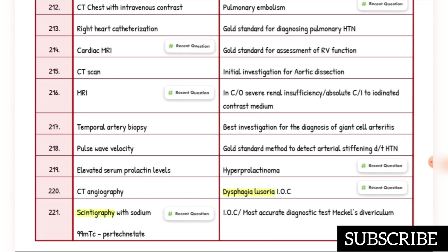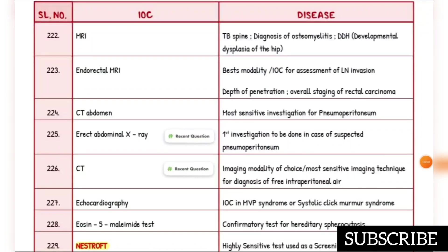Investigation of choice — most accurate diagnostic test for Meckel's diverticulum — is scintigraphy with sodium 99m-technetium pertechnetate. TB spine, diagnosis of osteomyelitis, DDH (developmental dysplasia of the hip): investigation of choice is MRI. Best modality for assessment of lymph node invasion is endorectal MRI.